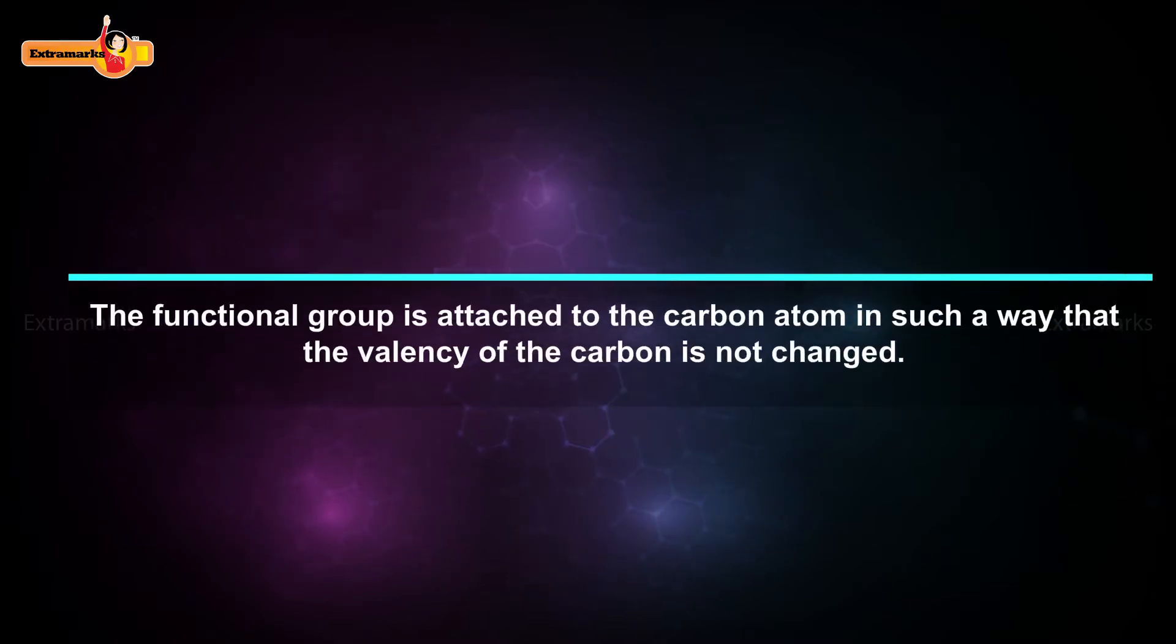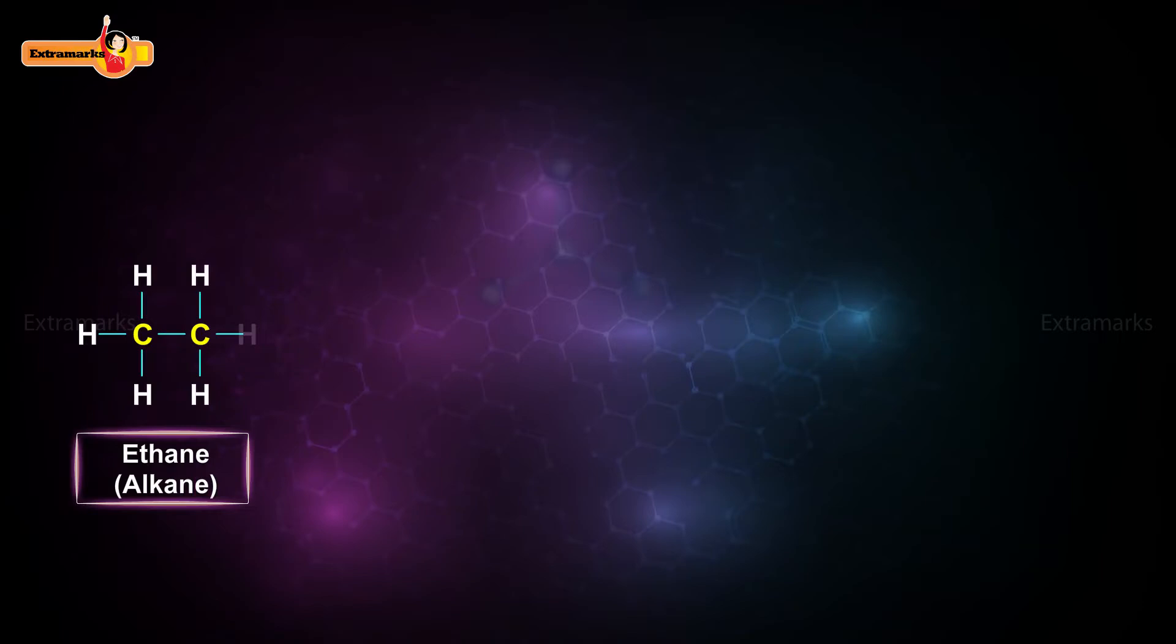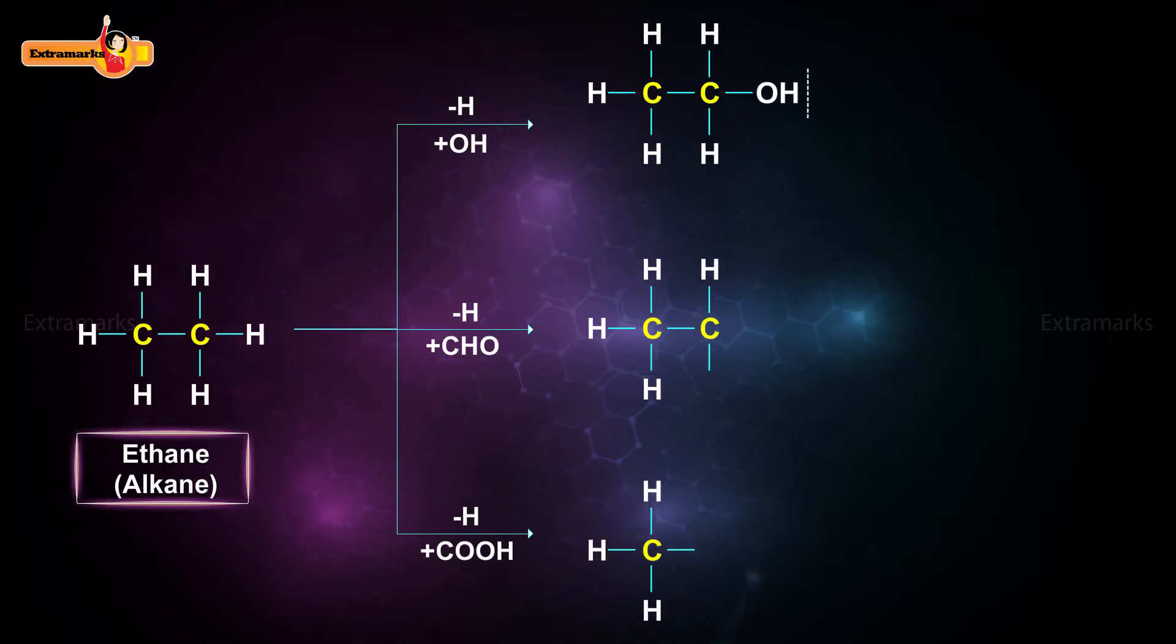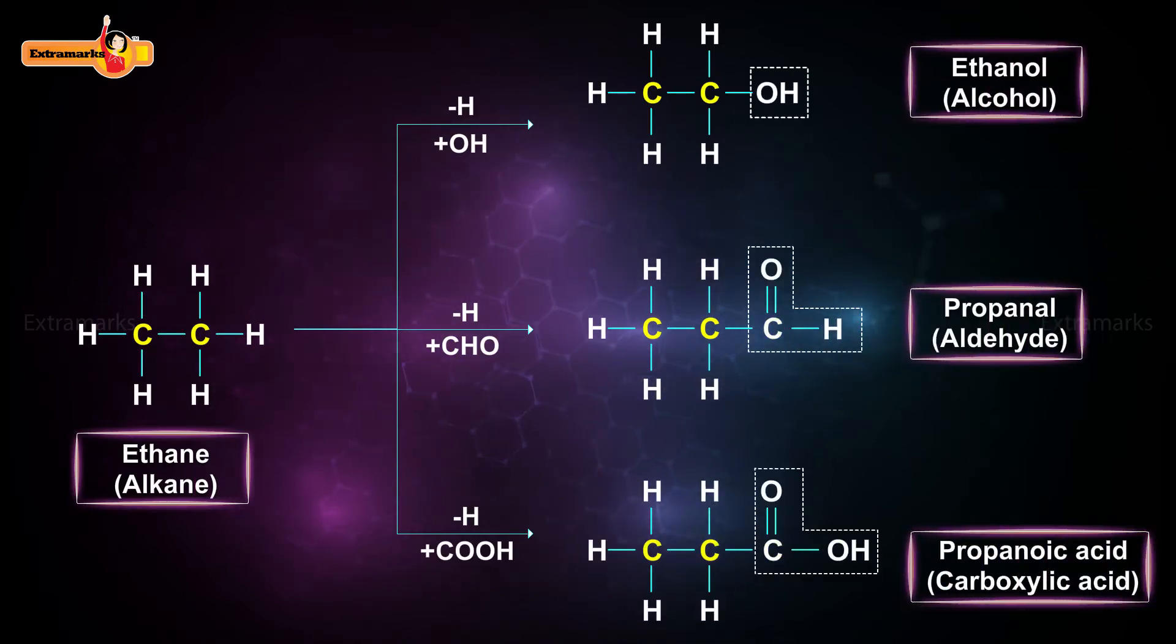The functional group is attached to the carbon atom in such a way that the valency of the carbon is not changed. For example, the compounds formed by the replacement of hydrogen in ethane by hydroxyl, aldehyde, and carboxyl functional group are ethanol, propanol and propanoic acid respectively. Remember the valency of carbon atom is always 4.